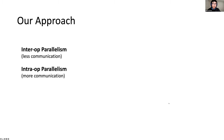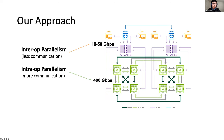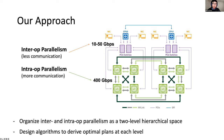Unlike existing systems, we build ALPA by taking a different view of parallelization techniques. We classify existing techniques into inter-operator parallelism and intra-operator parallelism, and organize these two parallelisms as a two-level hierarchical space. This hierarchical space naturally maps to the hierarchical structure of common GPU clusters today, where we have fast interconnects between GPUs inside a node such as NVLink, and relatively slower interconnects between different nodes such as Ethernet. We construct a two-level hierarchical search space and design algorithms to derive optimal plans at each level.